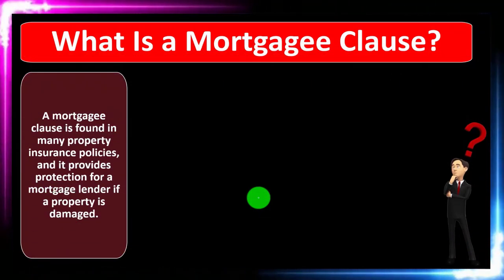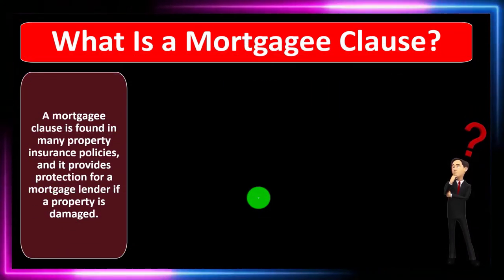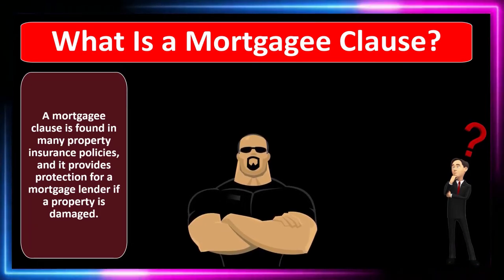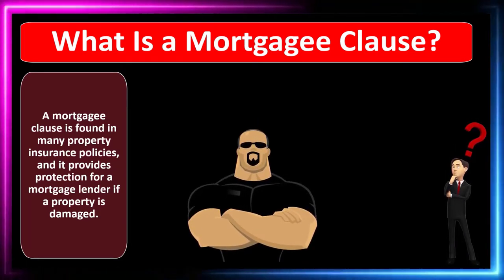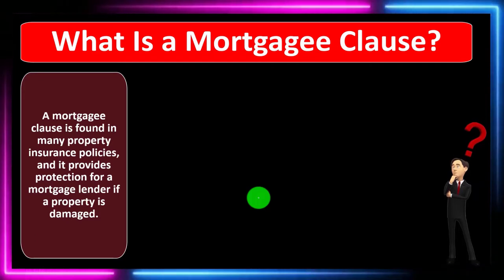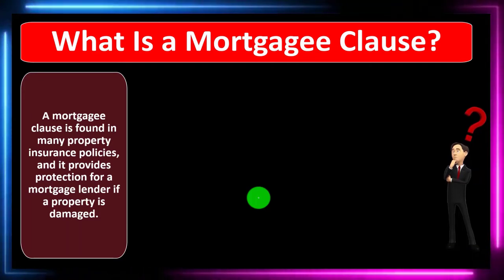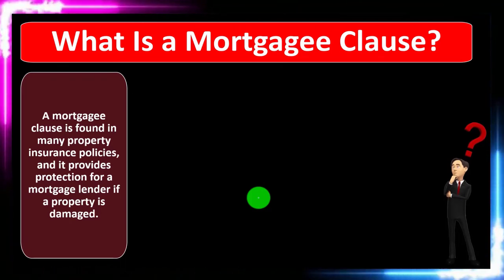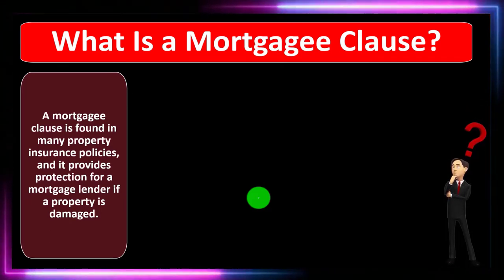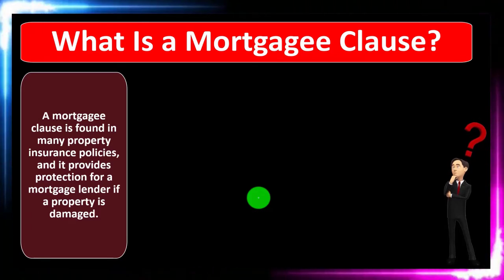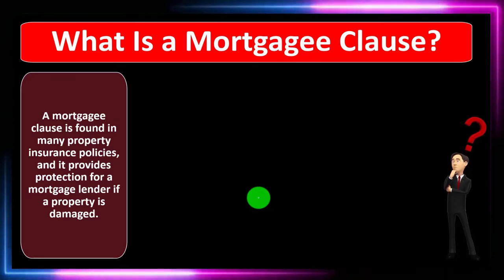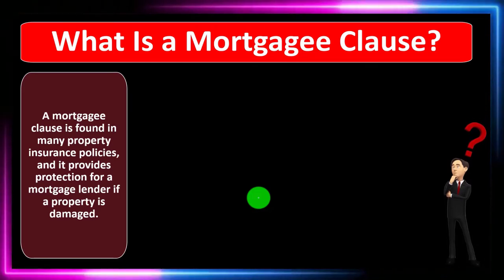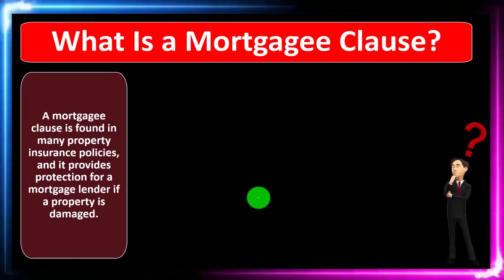A mortgagee clause is found in many property insurance policies and it provides protection for a mortgage lender if the property is damaged. When purchasing a home, most people need financing because they're not going to be able to simply put down cash. The lender will typically need the collateral — the home itself — to safeguard the loan, so that if you default, they have recourse against it.